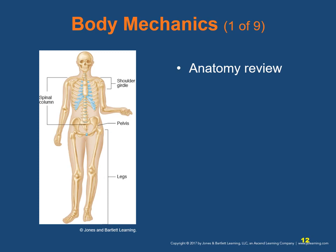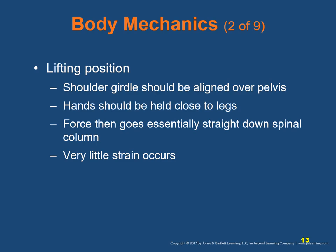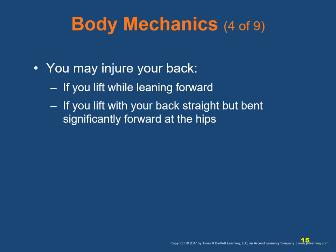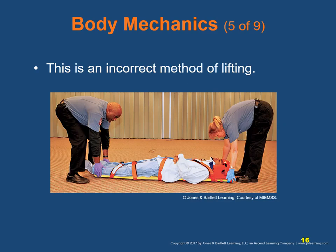Using good body mechanics while lifting and moving patients reduces your risk of injury. When standing upright, the weight of anything being lifted and carried in the hands is reflected onto the shoulder girdle, the spinal column, the pelvis, and then the legs. The shoulder girdle should be aligned over the pelvis, and the hands should be held close to the legs; force then goes essentially straight down the spinal column and very little strain occurs. This is the correct way to lift. You may injure your back if you lift while leaning forward or if you lift with your back straight but bent forward at the hips.